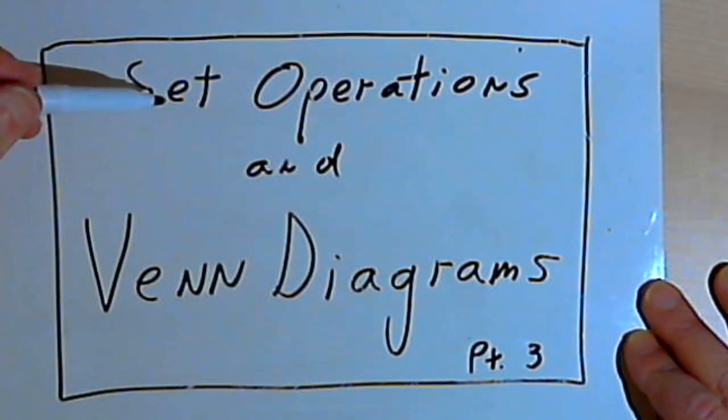This is going to be the third video about set operations and Venn diagrams. And what I want to do in this video is start with a Venn diagram and find the set operations that would have created that diagram.